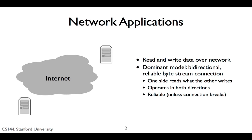So the basic model is that you have two computers, each running a program locally, and these two programs communicate over the network. The most common communication model used is a bi-directional, reliable stream of bytes.